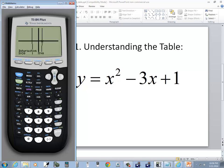So I'm going to do a zoom and choose z standard, set it back, then we'll go to y equals, press clear and I'll go down to y2 and clear that. And then we'll put in x squared minus 3x plus 1.